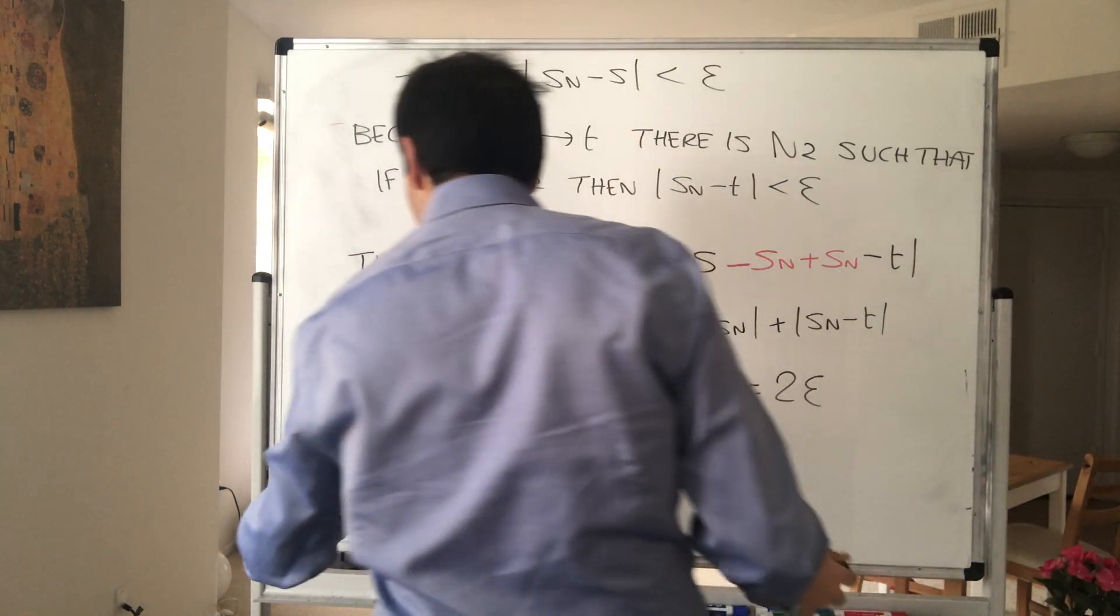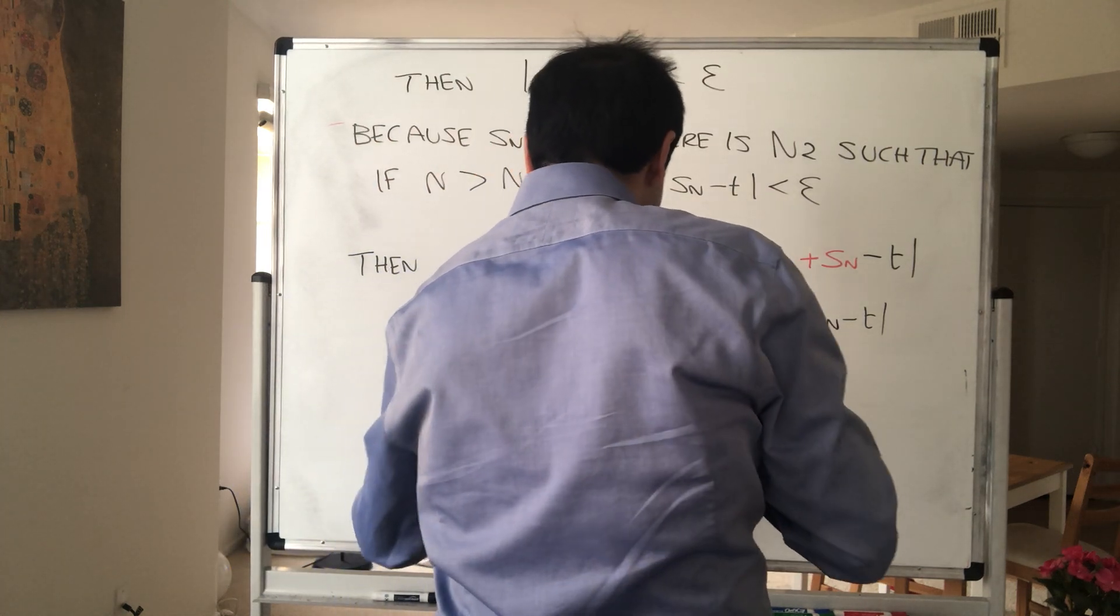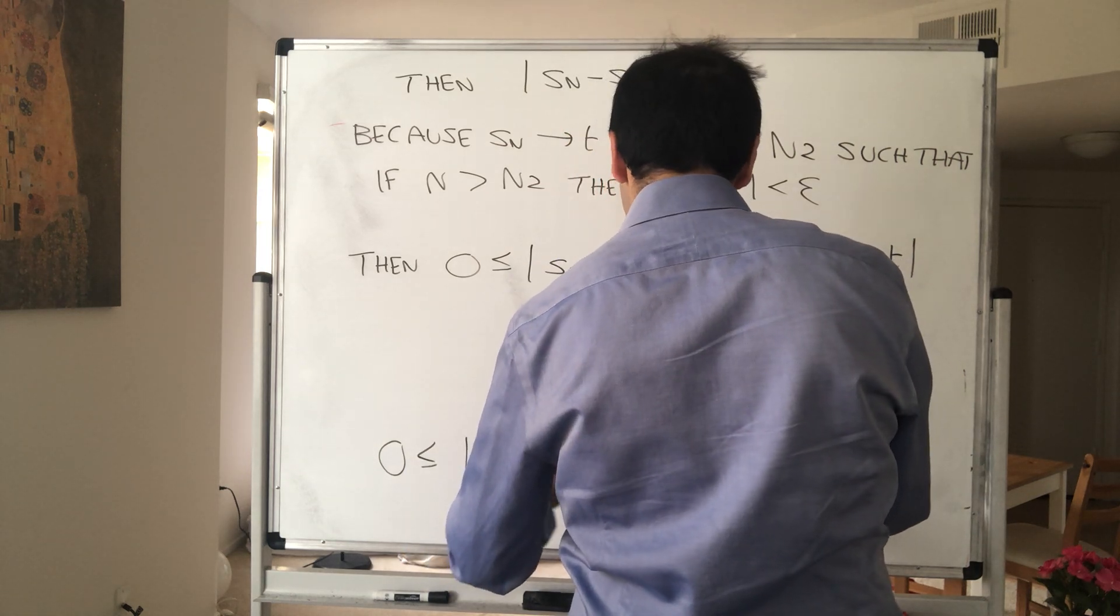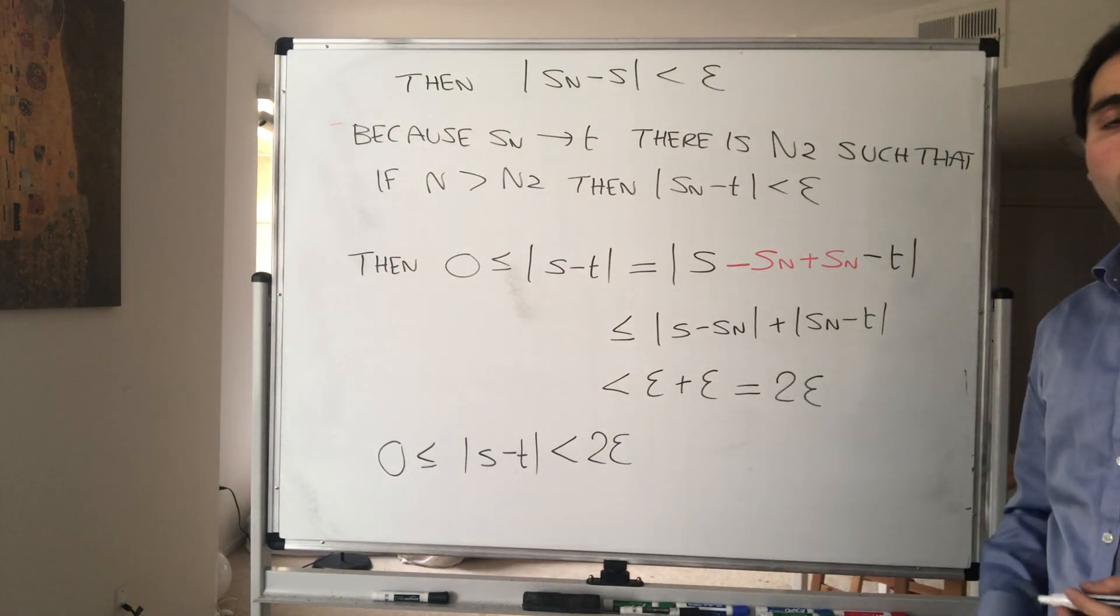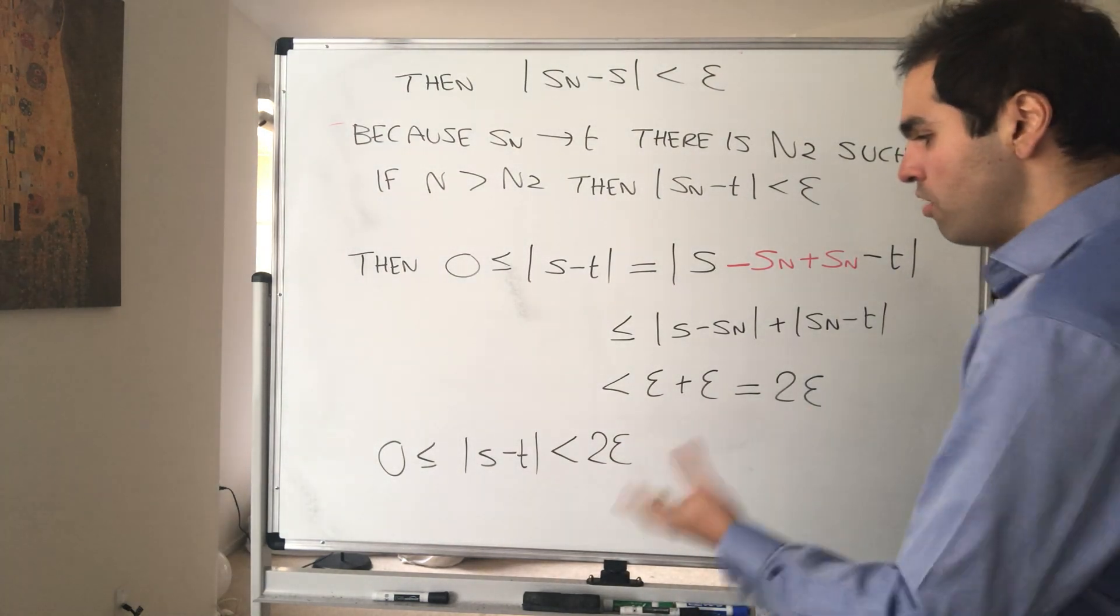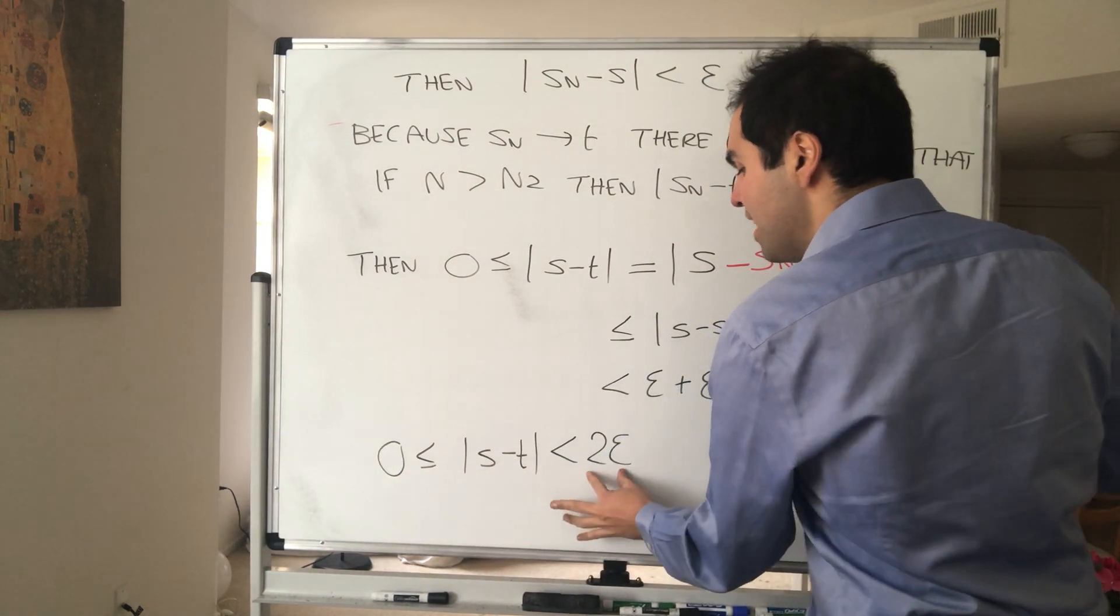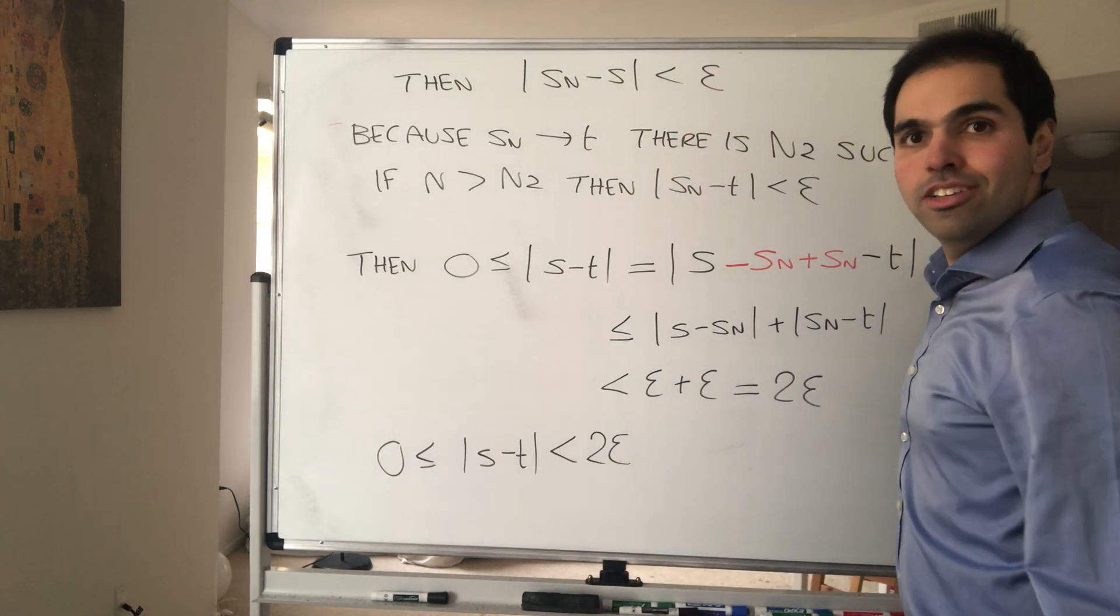We have that this number, this fixed number, S minus T, it's on the one hand, of course, non-negative, but also less than any arbitrary positive number. So in other words, what this is saying is, this non-negative number is arbitrarily small. So let's say it's smaller than 0.1, it's smaller than 0.01. So the only way this can work is if this number is zero. So since Epsilon